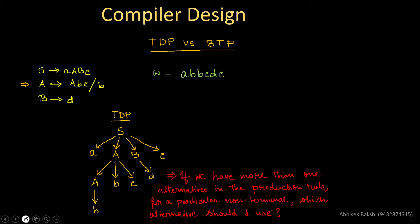Now if we consider the process of a bottom-up parser: a bottom-up parser starts from the string. So I have the string: a, b, b, c, d, c. There has to be some algorithm which reads the characters of the stream one by one.